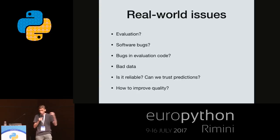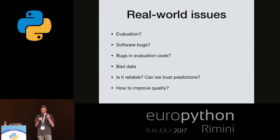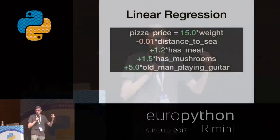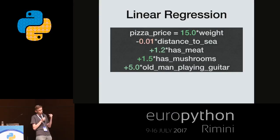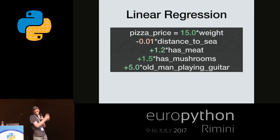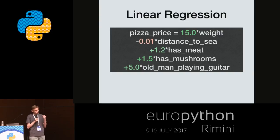I came to the conference a bit earlier, so I had time to walk by the shore. There are a lot of restaurants, and each restaurant has pizza. I visited these restaurants and I created a formula — how to compute pizza price. It's a linear regression formula. Pizza price depends on pizza weight, on distance to sea, on ingredients, and if there is an old man playing the guitar, that's very important for the pizza price.